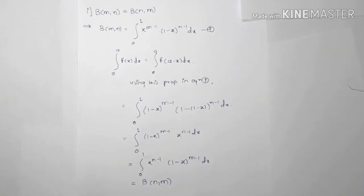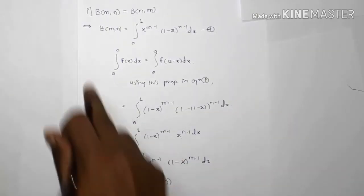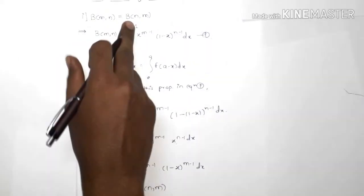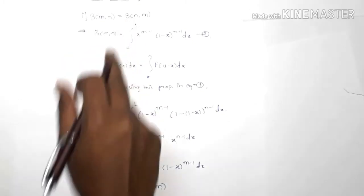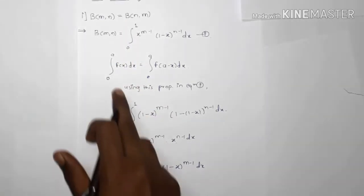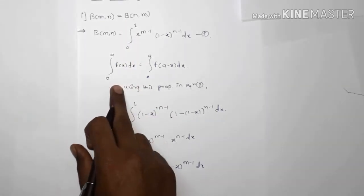This is how beta(m,n) is equal to beta(n,m) by the property of definite integrals, and the first property is proved.